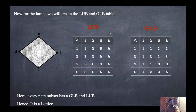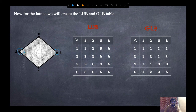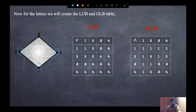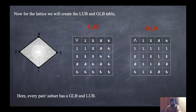Consider GLB(3,2): we need a greatest lower bound. From the Hasse diagram, both 1→3 and 1→2, so GLB(3,2)=1. Since every pair of elements has both a GLB and a LUB, the set is confirmed to be a lattice.